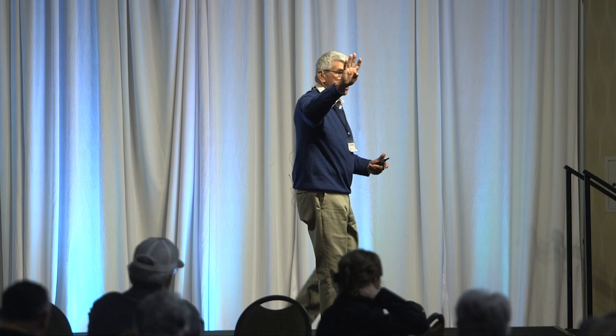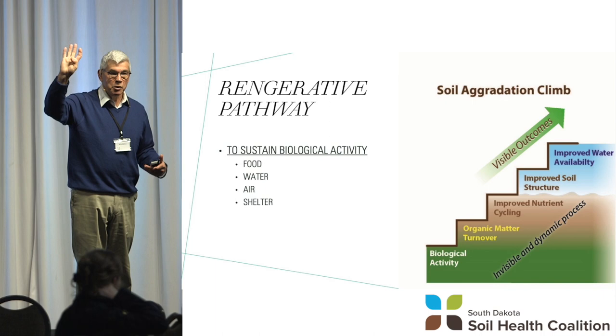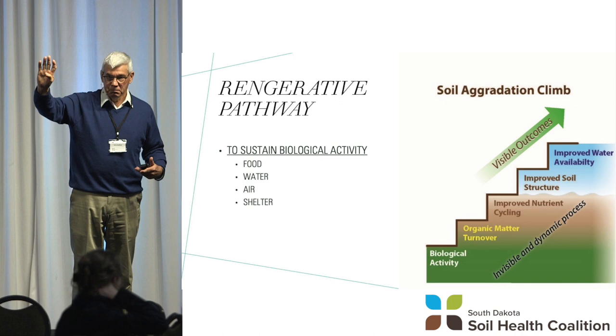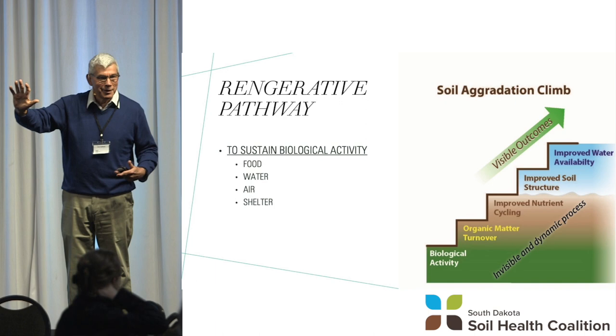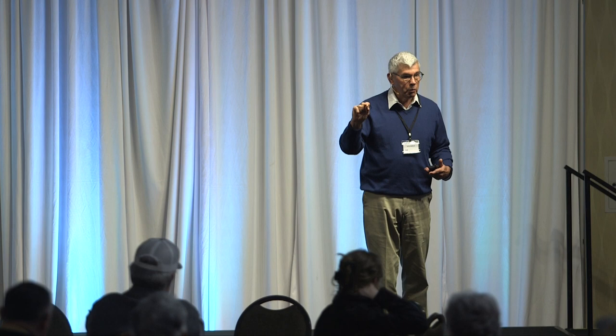Biology wants four things: food, water, air, and shelter. What do you want? The last couple weeks you really valued that shelter piece — 40-below wind chills. Shelter was really critical. We want to be fed, we've got to have air to breathe, we've got to have water, and we need to protect that environment. Shelter takes on many different aspects, and that changes the whole biological system.